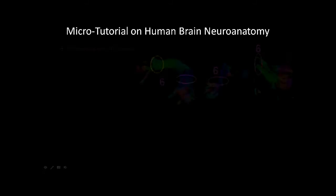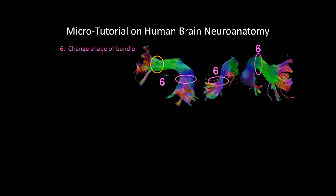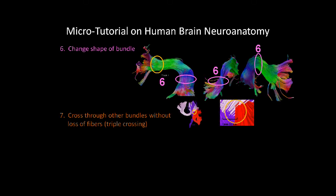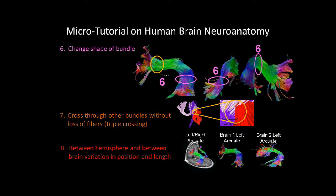Note that the shape of the bundles can change. In the case of the arcuate fasciculus, it's sort of like a ribbon cable, but it deforms as it goes around other structures. So one must not assume that it will have a constant shape throughout its course. Also, fibers cross — that is, multiple fiber bundles might intersect as they cross through a piece of structure. Finally, there are between-hemisphere and between-brain variations of typically about a centimeter or two, so as illustrated on the left-right arcuate fasciculus, they're slightly positioned in different locations.